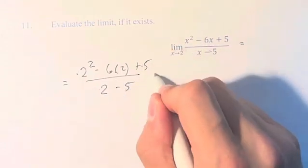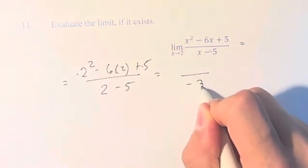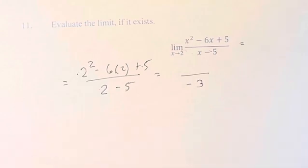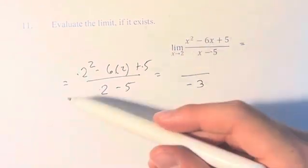And this denominator, 2 minus 5, is equal to negative 3. It's not equal to 0, so there's no issue with just directly plugging in a value of 2.